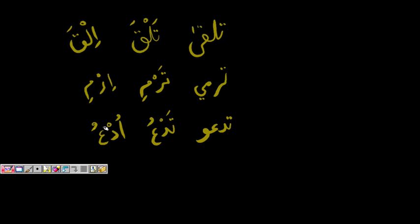The full amr paradigm: إِلْقَ, إِلْقَيَا, إِلْقَوْا, إِلْقَيْ, إِلْقَيَا, إِلْقَيْنَ — the qaf has a fatha throughout. Then إِرْمِ, إِرْمِيَا, إِرْمُوا, إِرْمِي, إِرْمِيَا, إِرْمِينَ. And اُدْعُ, اُدْعُوَا, اُدْعُوا, اُدْعِي, اُدْعُوَا, اُدْعُونَ.